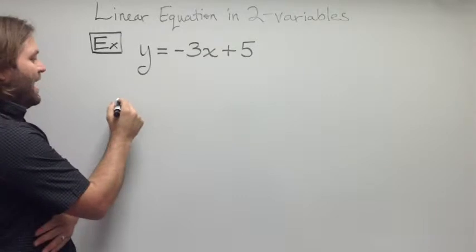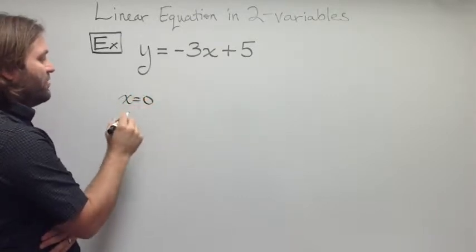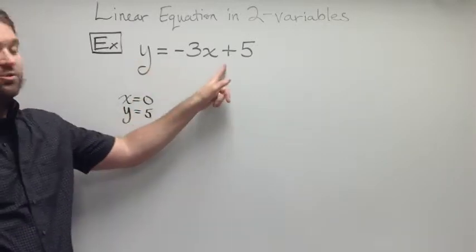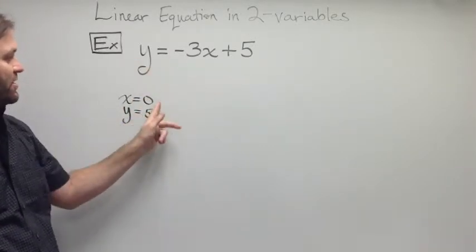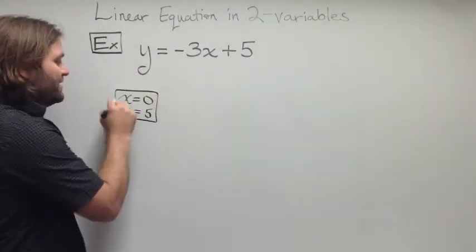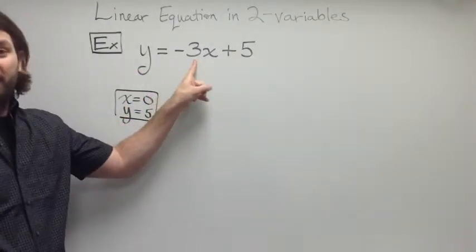Well, let's see. If x were equal to 0, and y were equal to 5, this would make this a true statement, because 3 times 0 is 0, plus 5 is 5. So, we would say that this is a solution to this equation.